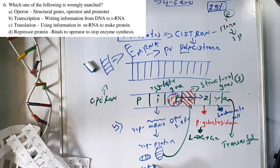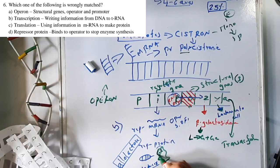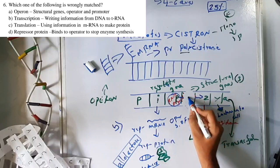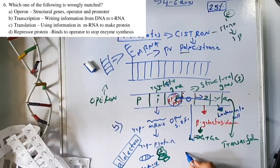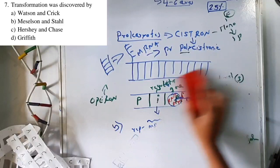In lac operon, the inducer (allo-lactose or lactose) binds to the repressor protein, changing its shape so it cannot bind to the operator. The operator is now free, RNA polymerase can read ZYA, and the lac operon is switched on.